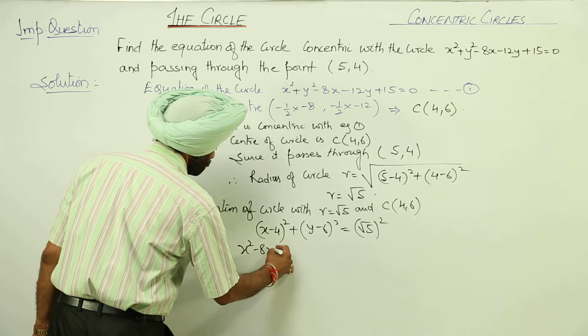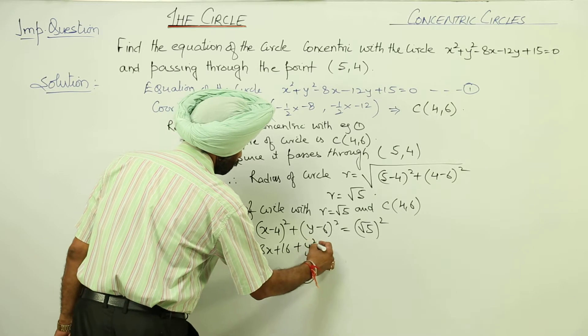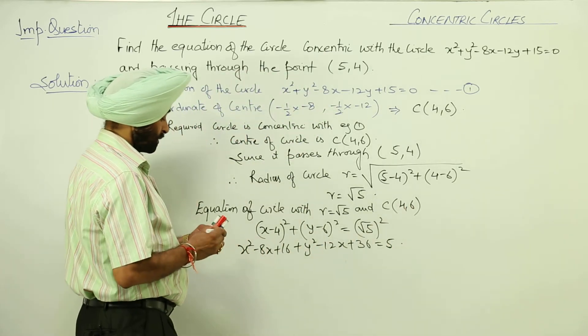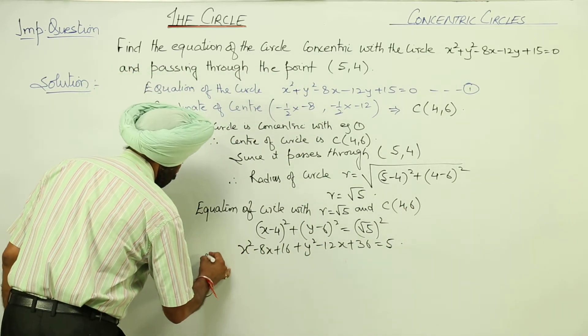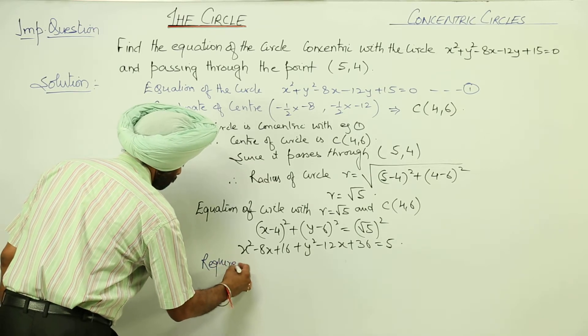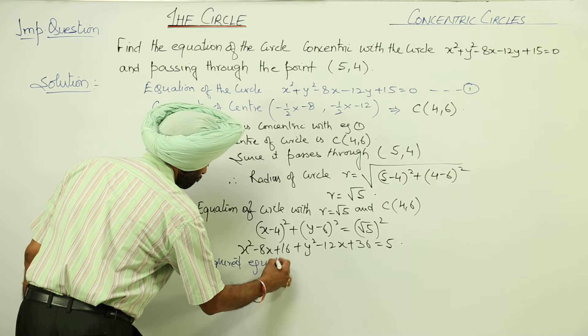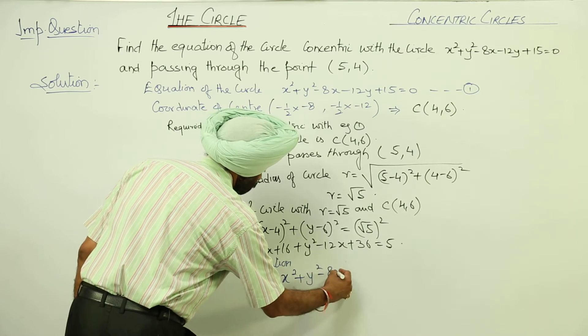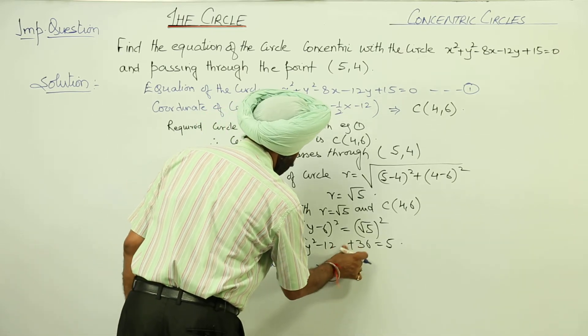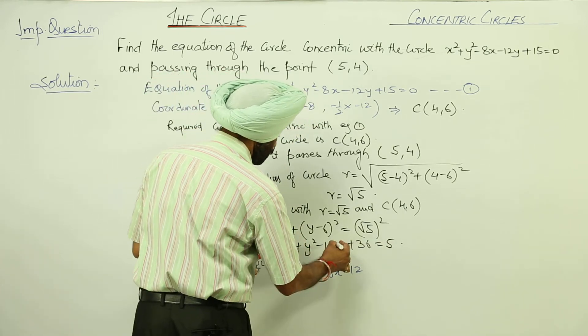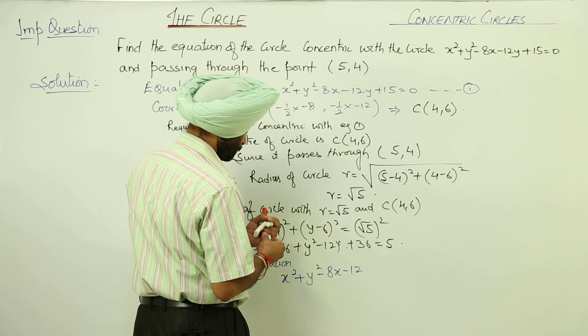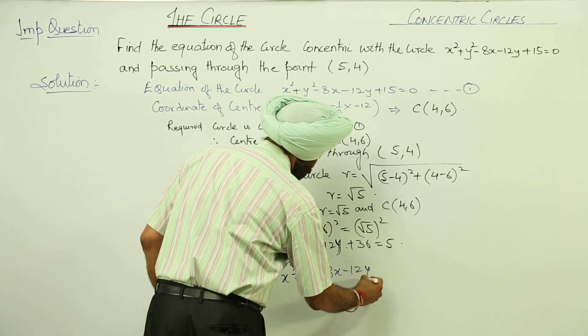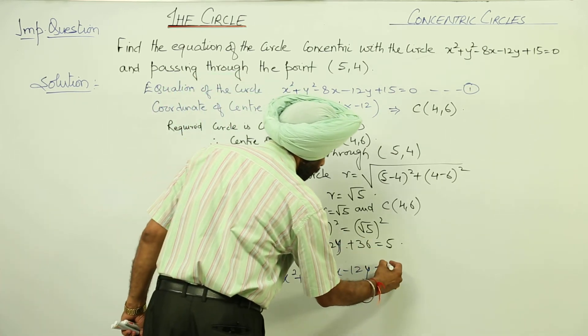x² - 8x + 16 + y² - 12y + 36 = 5. x² + y² - 8x - 12y + 16 + 36 - 5. This is our final answer.